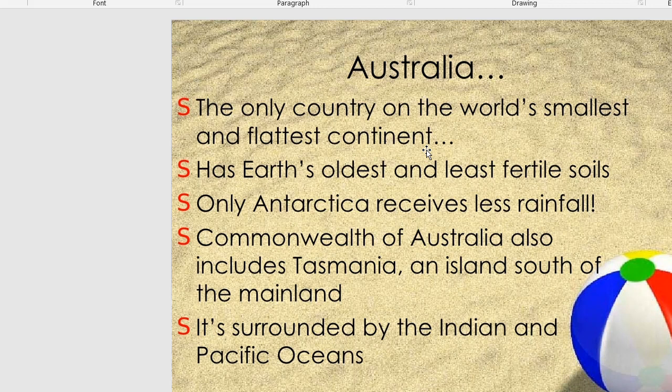Australia has Earth's oldest and least fertile soil. Only Antarctica receives less rainfall. The Commonwealth of Australia also includes Tasmania, an island south of the mainland.